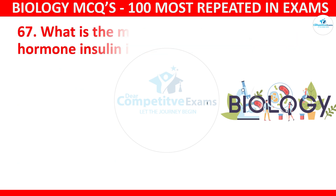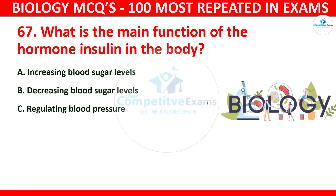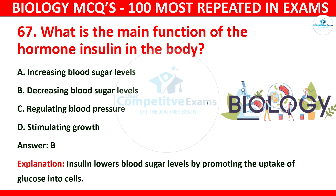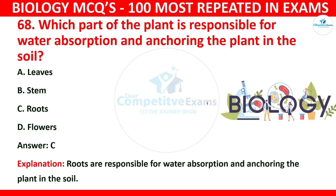Question number 67: What is the main function of the hormone insulin in the body? The options are increasing blood sugar levels, decreasing blood sugar levels, regulating blood pressure, or stimulating growth. The correct answer is B: decreasing blood sugar levels. Insulin lowers blood sugar levels by promoting the uptake of glucose into cells. Question number 68: Which part of the plant is responsible for water absorption and anchoring the plant in the soil? The correct answer is C: roots. The roots are responsible for water absorption and anchoring the plant in the soil.